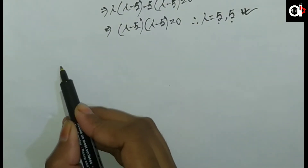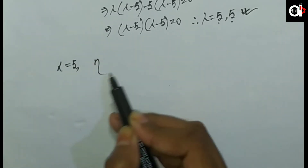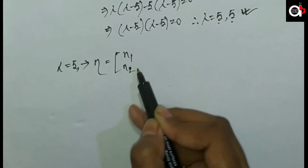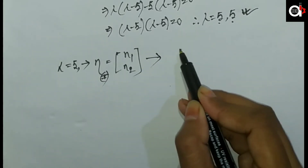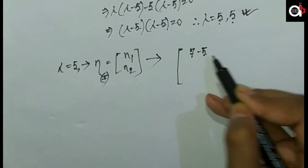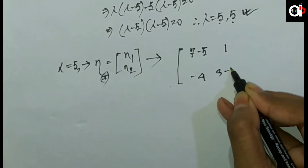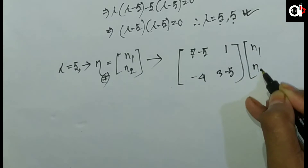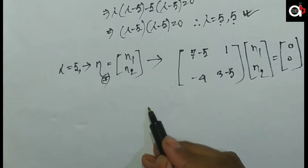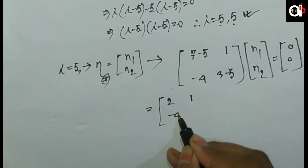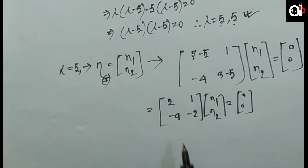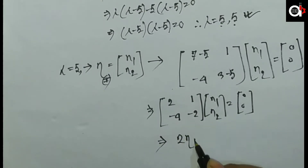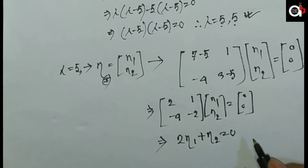For lambda equals 5, we compute (A minus 5I). The matrix becomes: row one [7 minus 5, 1] = [2, 1], and row two [minus 4, 3 minus 5] = [minus 4, minus 2]. Setting this times [eta1, eta2] equals zero, we get 2 eta1 plus eta2 equals zero and minus 4 eta1 minus 2 eta2 equals zero.